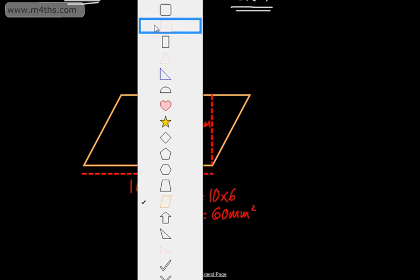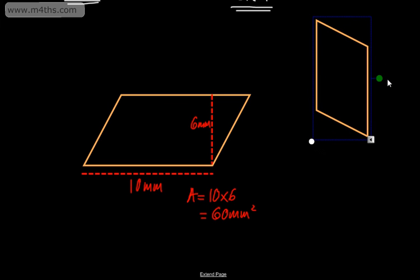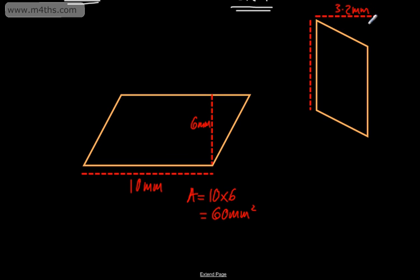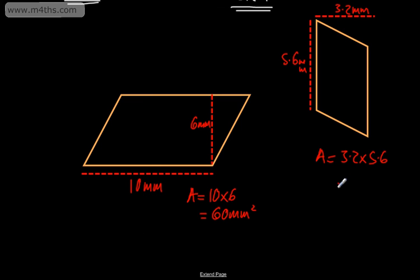Let's do another one — a parallelogram that might be oriented a different way. We'll say the base is 3.2 millimeters and the perpendicular height is 5.6 millimeters. All we do is say the area equals 3.2 multiplied by 5.6. Using a calculator, that gives us 17.92, and remembering to include the units, the answer is 17.92 millimeters squared. Always check that your units match.